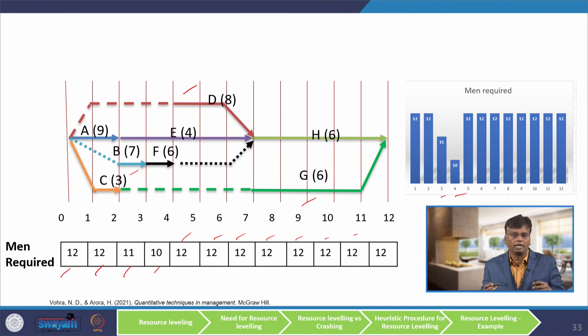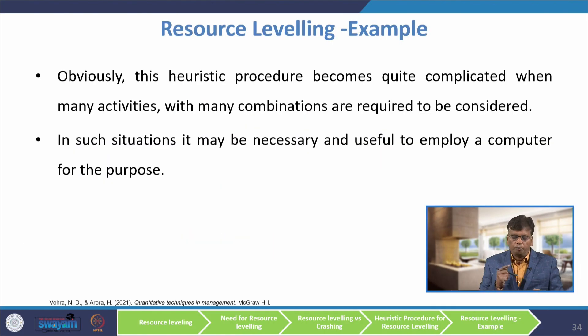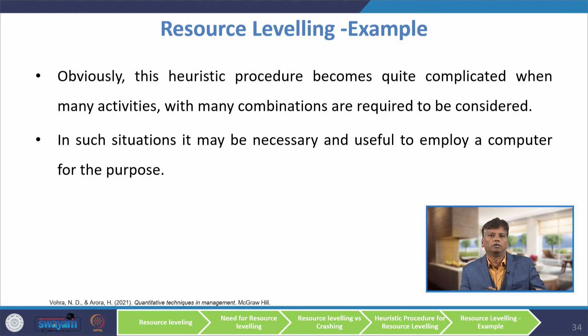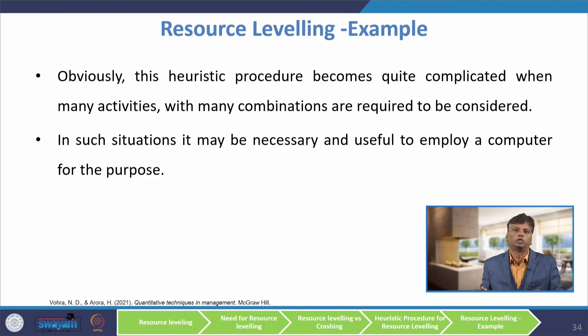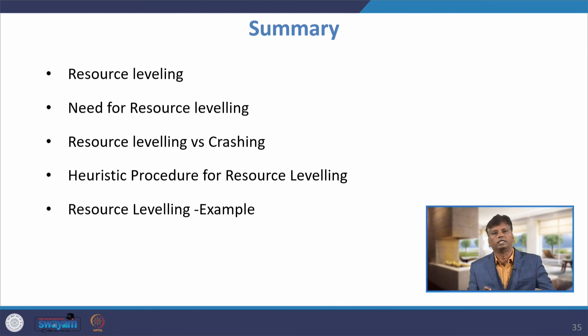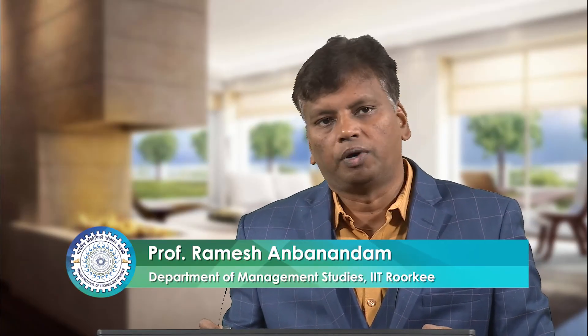When you adjust the early start times of non-critical activities, the manpower requirement becomes equally leveled. This is a trial-and-error heuristic method. If the problem is very large with many activities, manually doing this adjustment is not possible and you have to use optimization techniques and software. This heuristic procedure becomes quite complicated when many activities with many combinations are required to be considered; in such situations it may be necessary to employ a computer. In this lecture I have explained what is resource leveling, the need for resource leveling, resource leveling versus crashing, and with the help of a numerical example using a heuristic procedure, how to do the leveling. Thank you.